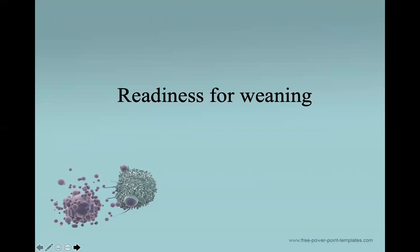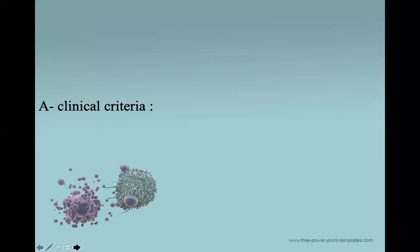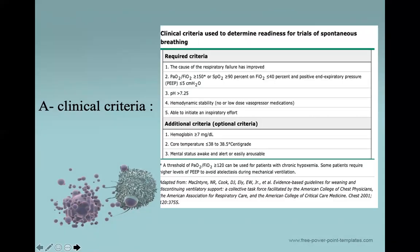We'll start talking about the first step, which is readiness for weaning. Clinical criteria consists of objective data easily collected at the bedside that gives us a hint that the patient is ready to wean from mechanical ventilation. This clinical criteria includes some required criteria and some additional criteria. The required criteria include, number one, that the cause of respiratory failure has improved — the condition that put the patient on mechanical ventilation has subsided or been treated.